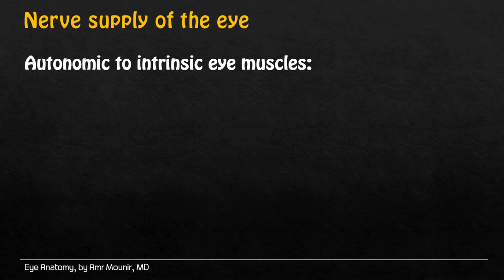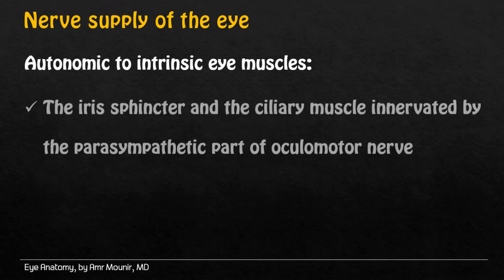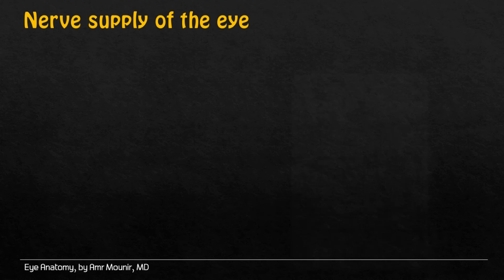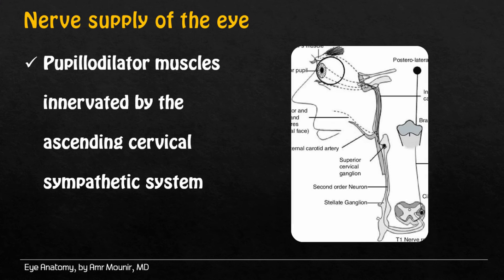Autonomic innervation to extrinsic muscles of the eye: iris sphincter and the ciliary muscle are innervated by the parasympathetic part of the ocular motor nerve. Bupilodilator muscles are innervated by the ascending cervical sympathetic system.